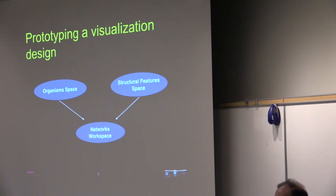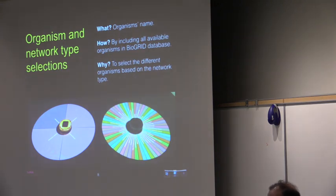The first task a user might want to do is select an organism and its type. The system draws data from the bi-grid database which includes 60 different organisms. The selection is made with a tangible interactive object that we call an actable. You could see it here in the donut chart, in the middle of the donut chart. When the actable is placed on the table, the organism selection menu is shown around it on the right.